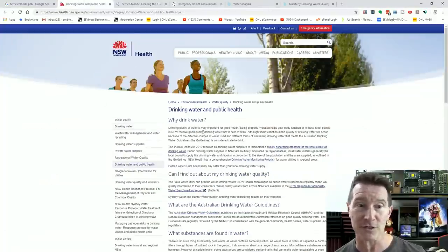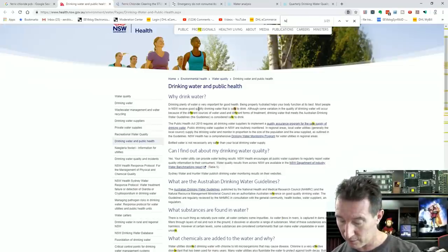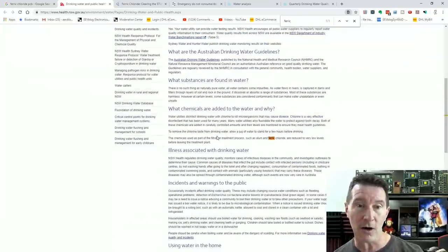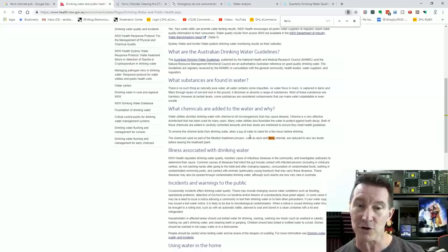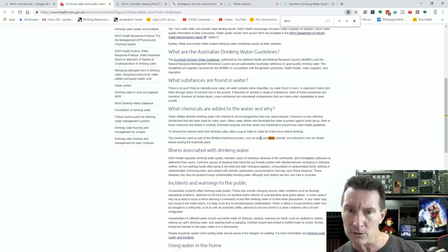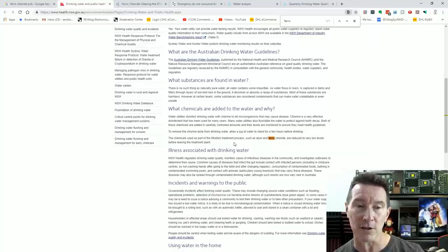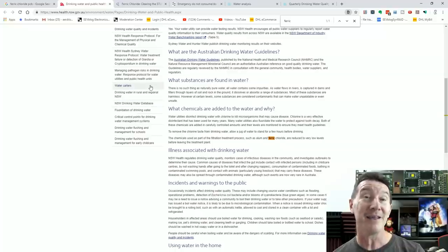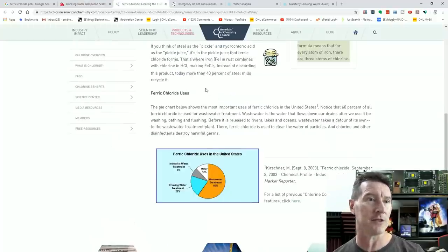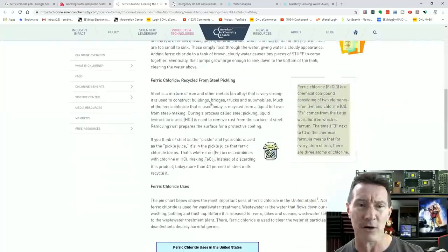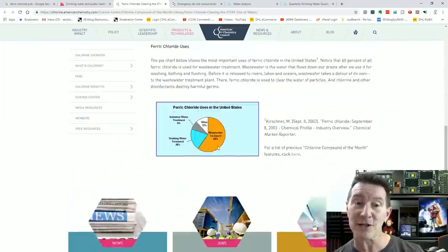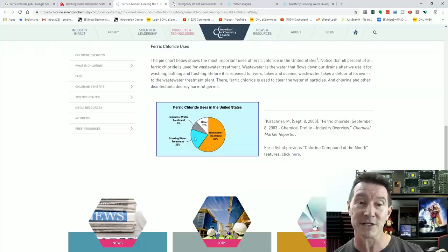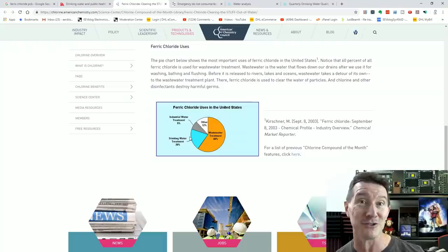Then I remembered that they actually put ferric chloride into the drinking water. And Mrs. EEVblog confirmed this. And sure enough, New South Wales Government Department, drinking water, ferric chloride. What chemicals are used? The chemicals used as part of the filtration treatment process, such as alum and ferric chloride, are reduced to very low levels before leaving the treatment plant. Very low levels, but they're actually not zero.